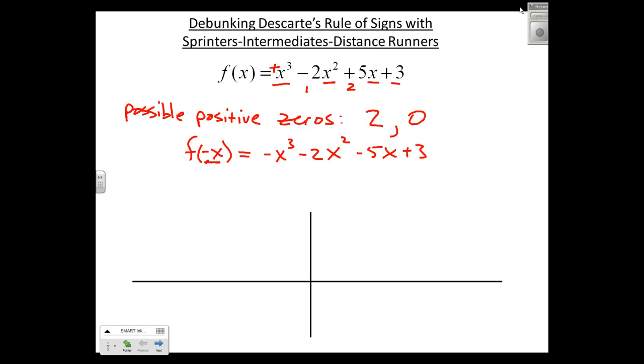So here we see we have just one change. Therefore, our number of possible negative zeros is exactly 1.